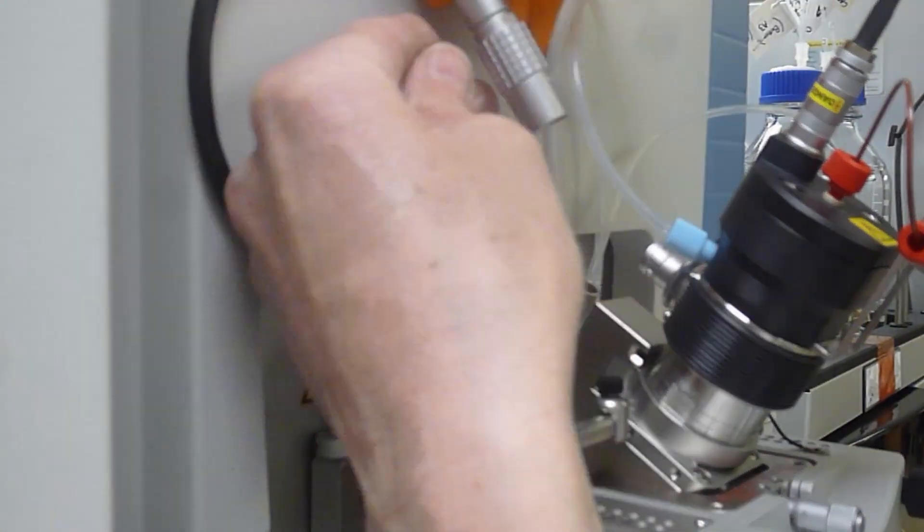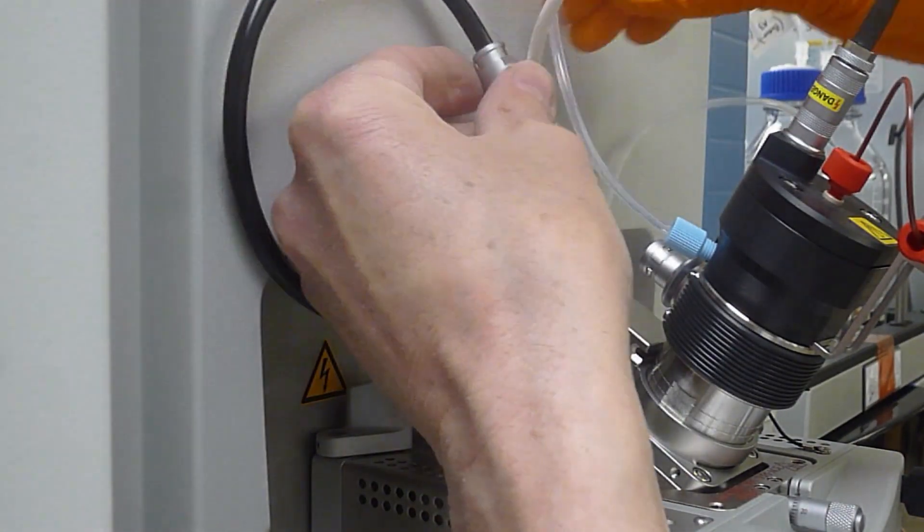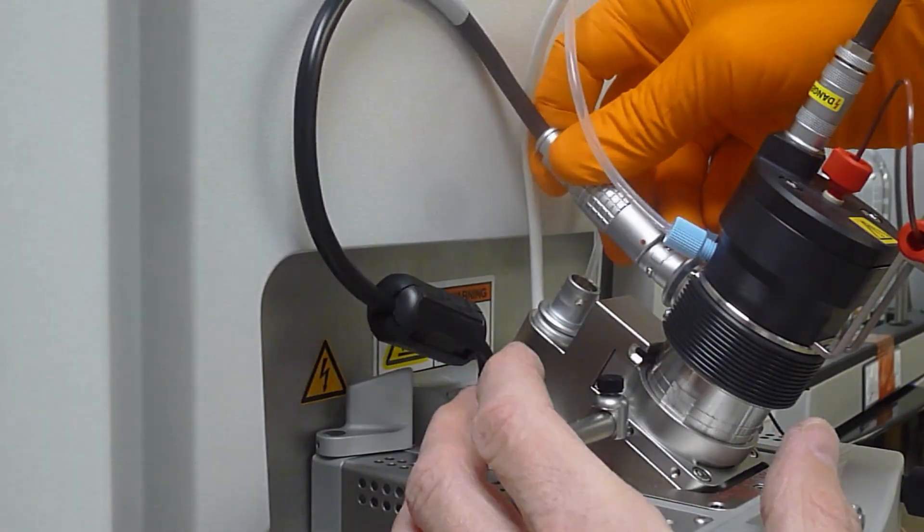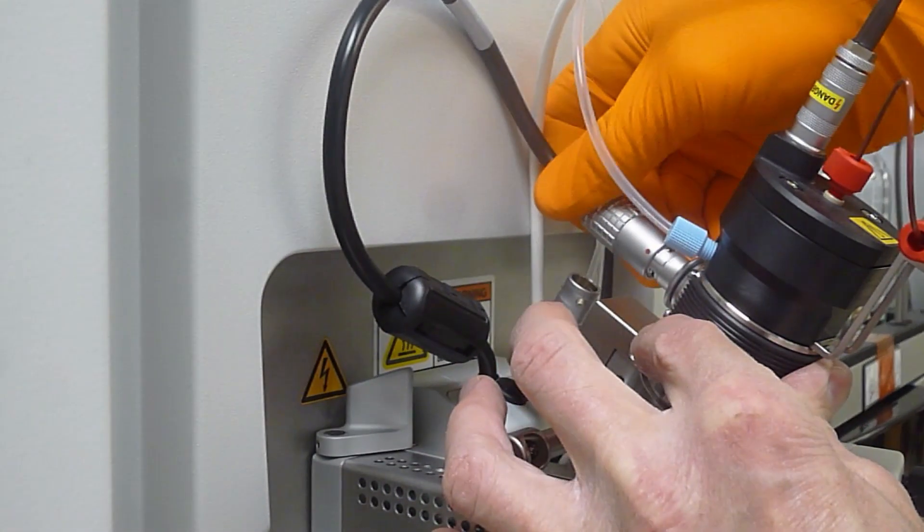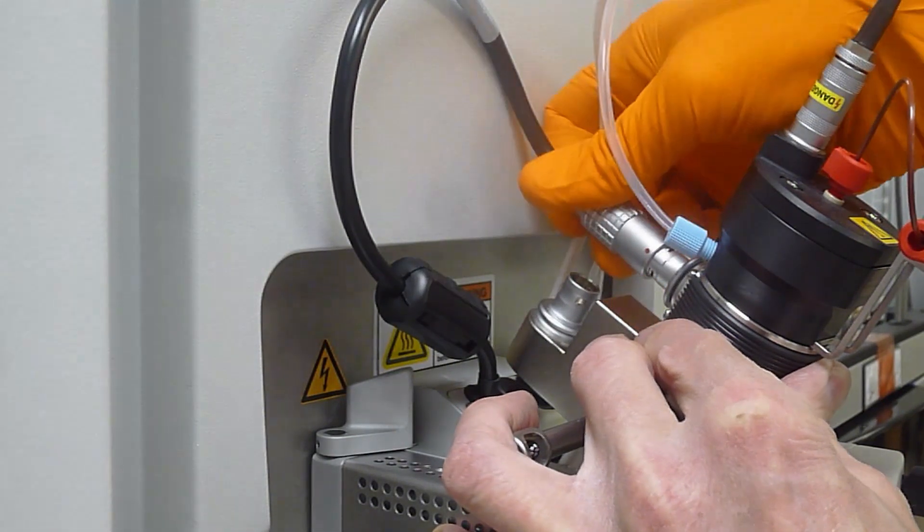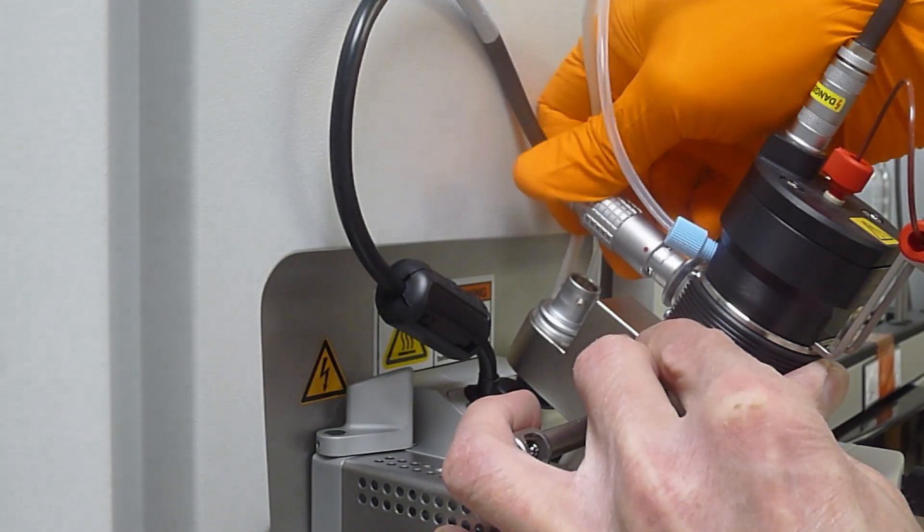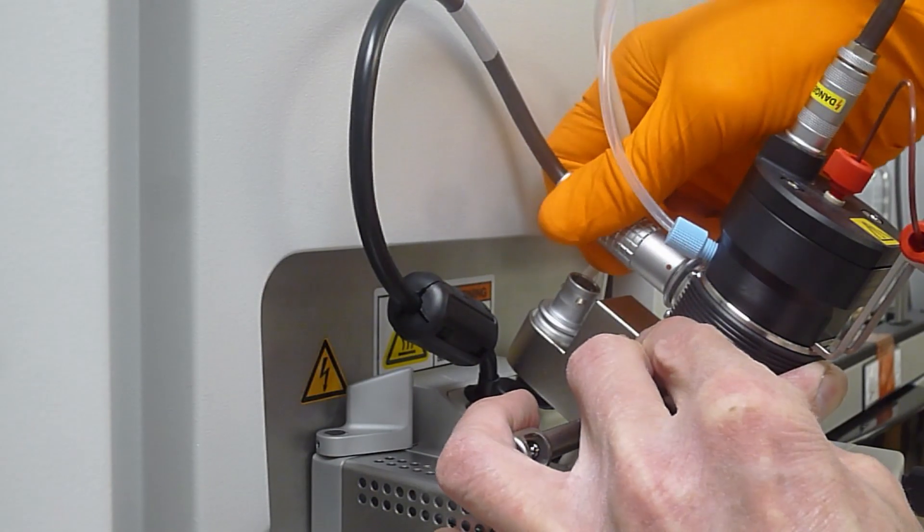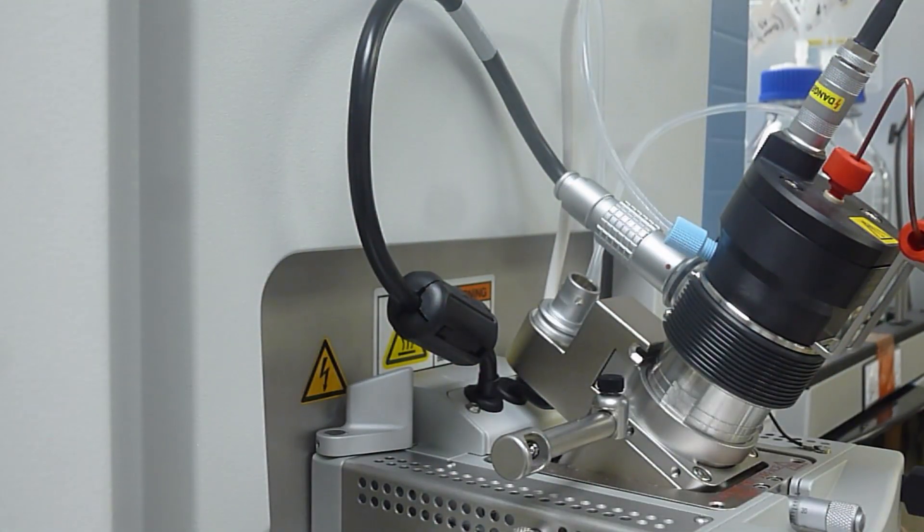Finally, fit the heater cable, making sure that you align the little red dot on the outside of the plug with the dot on the collar. This can also be a bit of a fiddle. The ESI spray chamber is now successfully installed.